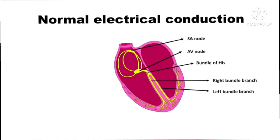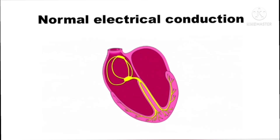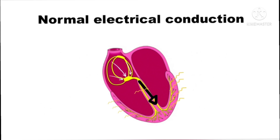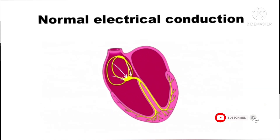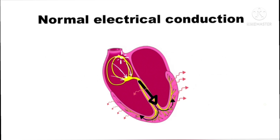Before we delve into LBBB, you must know the electrical conduction which normally happens in the heart. This cartoon demonstrates the flow of electrical conduction from the SA node to the AV node, to the bundle of His, through the bundle branches, and into the ventricles. There is a separate video covering the details of normal conduction — the link is in the description below.